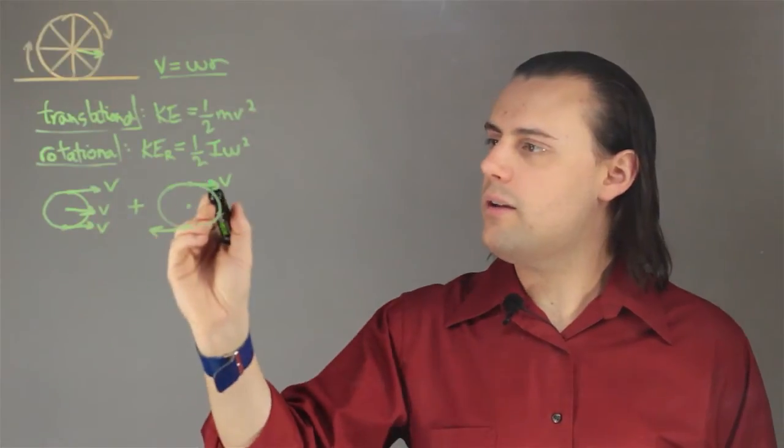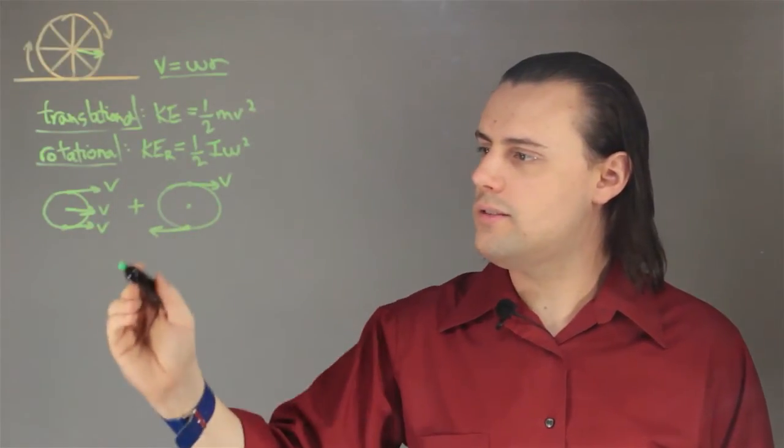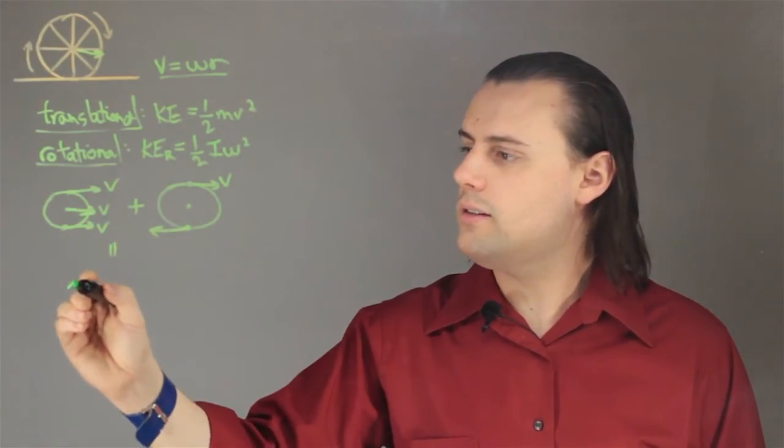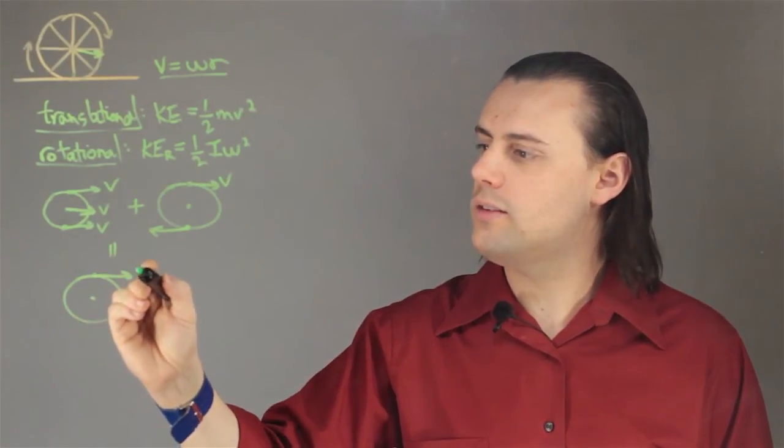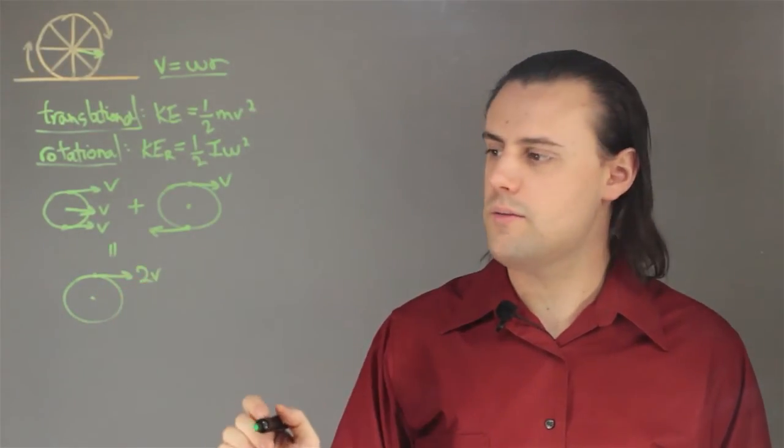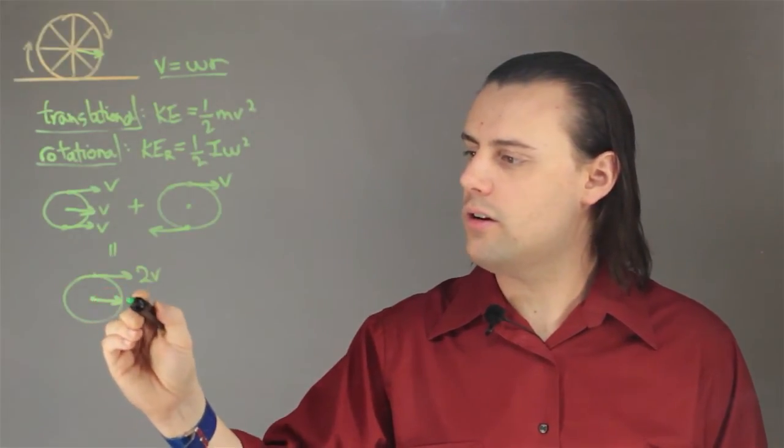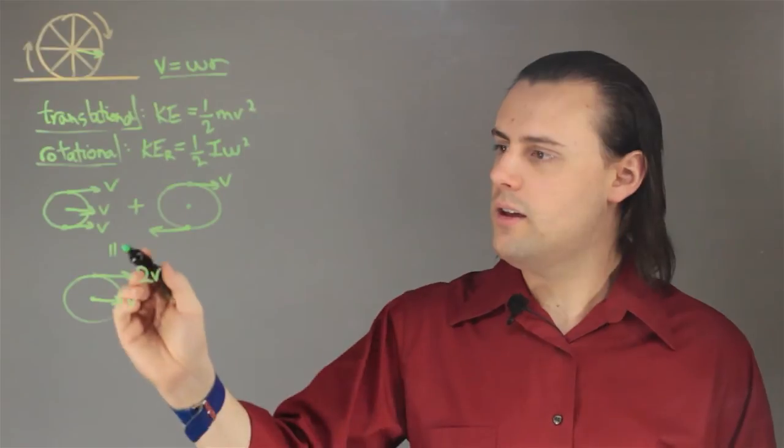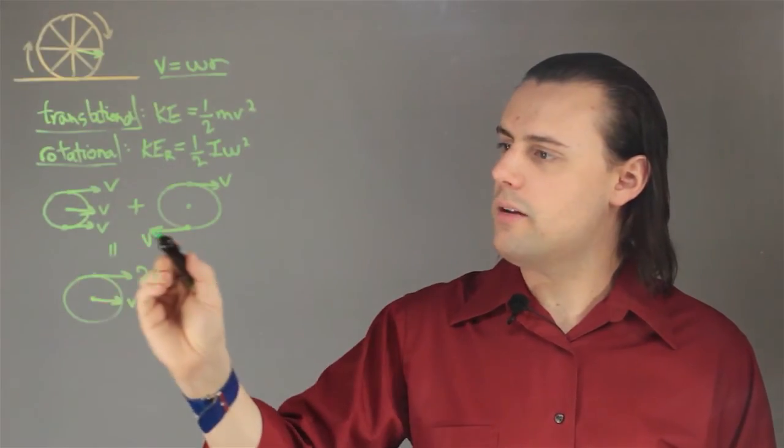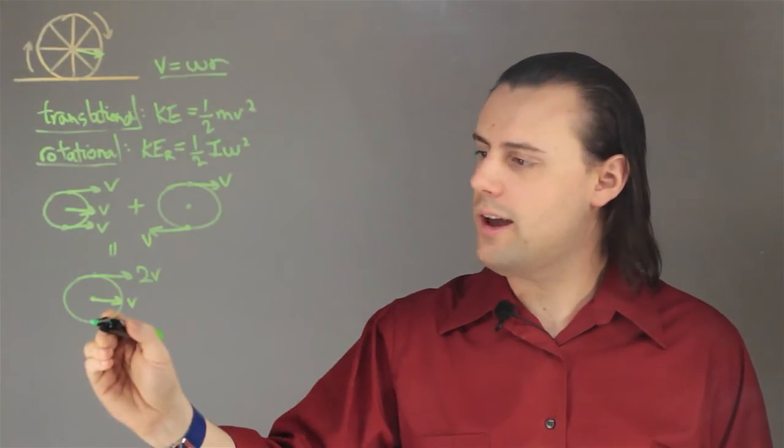When we add up these velocity vectors, we see that at the top we actually get twice the velocity of the center of mass. At the center we just have our normal velocity, but we see that at the bottom these two velocities cancel out.